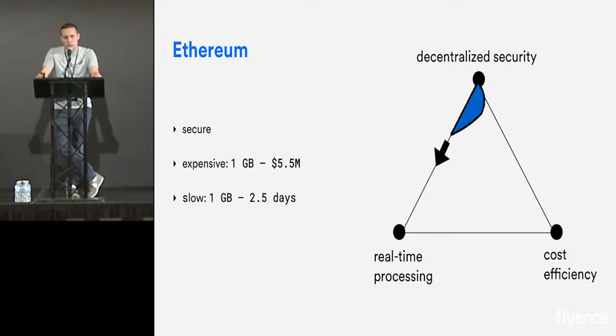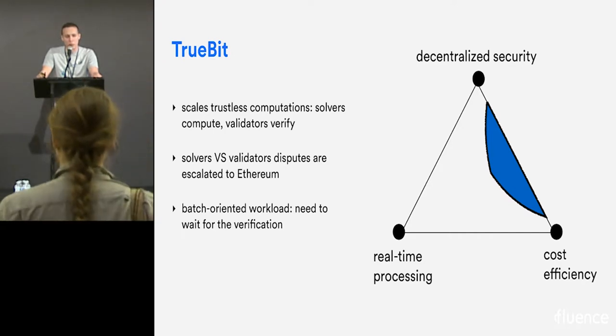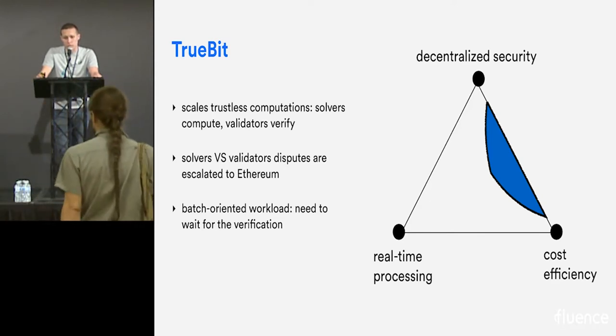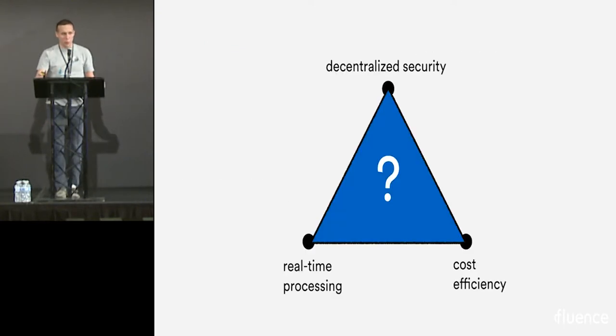There are other solutions in the decentralized ecosystem. For example, Truebit. What folks from Truebit are doing is they have nodes performing computations and nodes called validators trying to catch bad guys. If they find mistakes in the computation, they escalate disputes to Ethereum, which is used as the final judge. Truebit is great, it has most of the required decentralization and security, and it's fairly cost efficient, but it's not really real time and uses timeouts. So how do we fill this entire triangle? I'm not really sure to be honest. Maybe one day zero-knowledge proofs will come and save us all, but right now I can only think of an engineering solution. That's what we've been working on at Fluence.